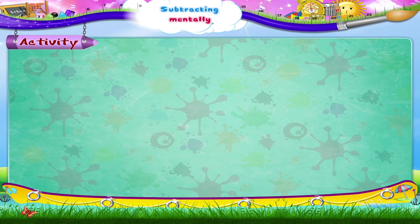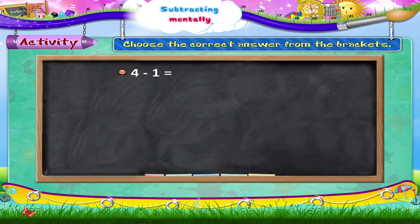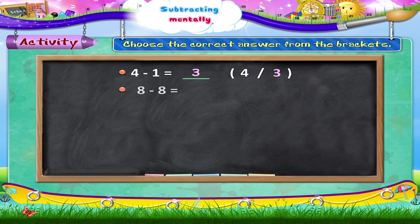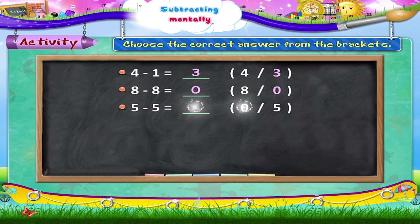In this activity, you have to choose the correct answer from the brackets. 4 minus 1 equals dash — 4 or 3? 4 minus 1 equals 3. 8 minus 8 equals dash — 8 or 0? 8 minus 8 equals 0. 5 minus 5 equals dash — 0 or 5? 5 minus 5 is equal to 0.